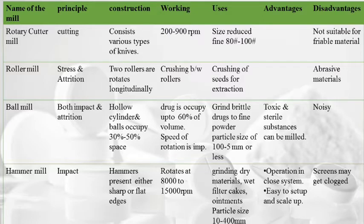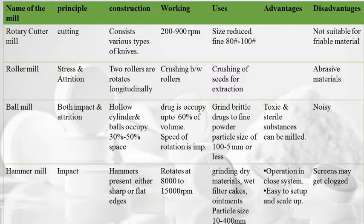Ball mill can grind brittle drugs to fine powders achieving particle size of 100 to 5 mm or less; advantage is it can be used for toxic and sterile substances, but it is very noisy. Hammer mill works on the principle of impact; hammers have sharp or flat edges and rotate at 8,000–15,000 rpm; used for dry materials, wet filter cakes, and ointments; particle size of 10–400 mm can be achieved; easy to set up and scale up; disadvantage is the screen may get clogged.